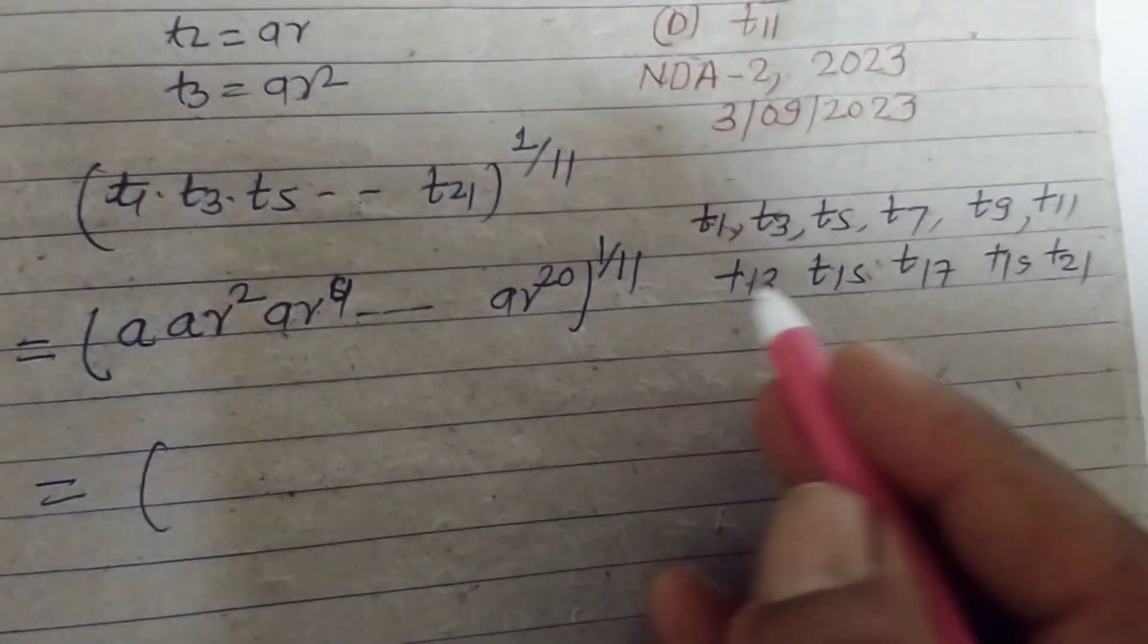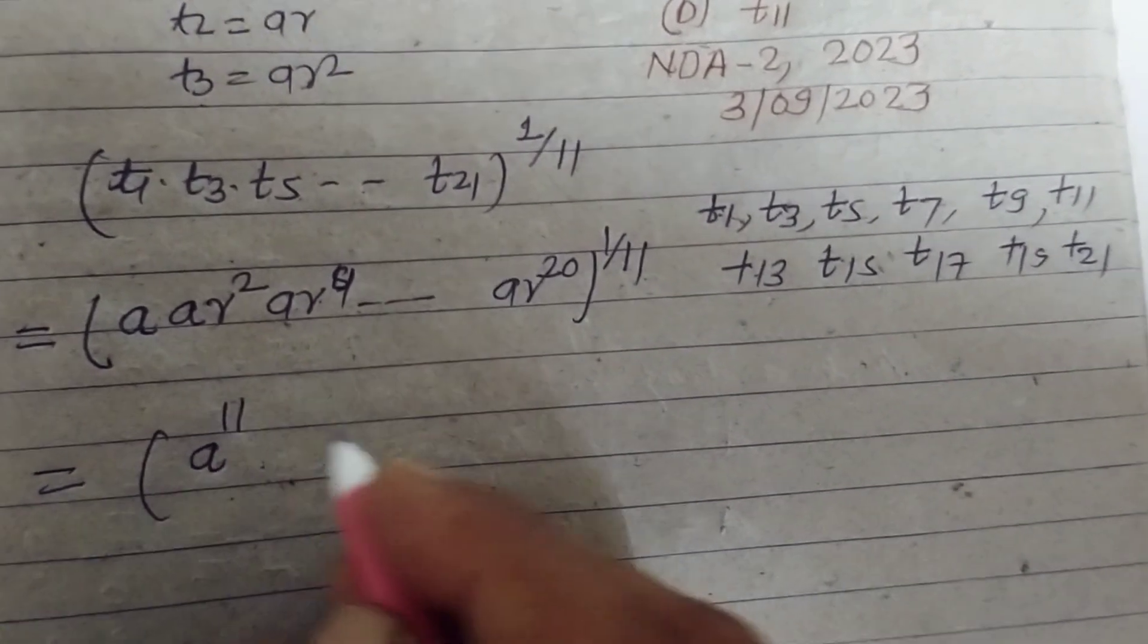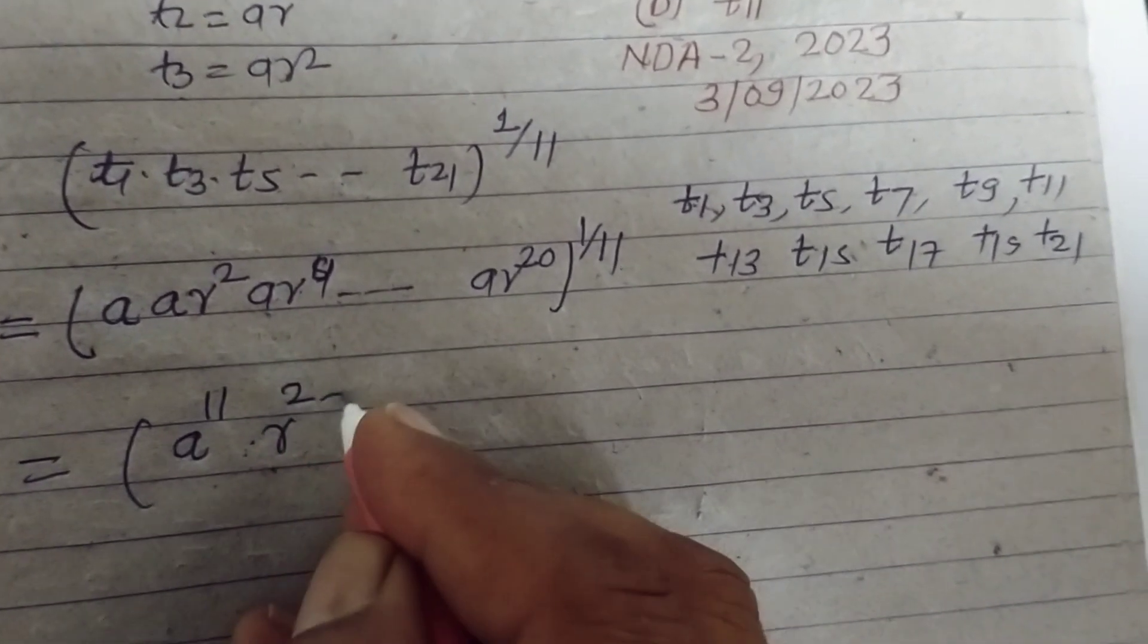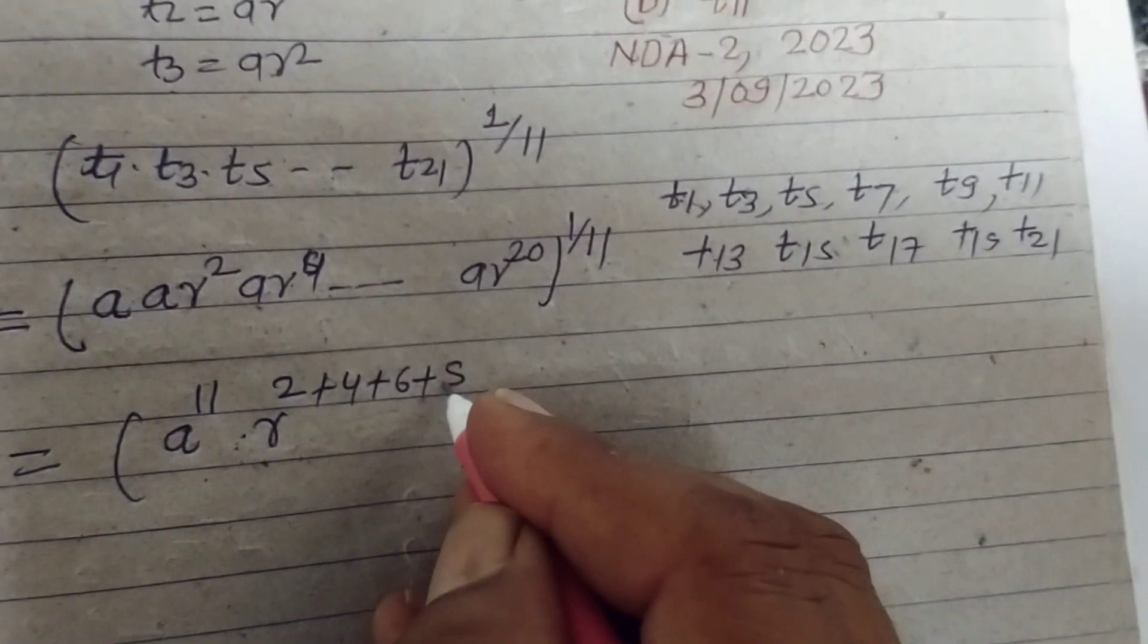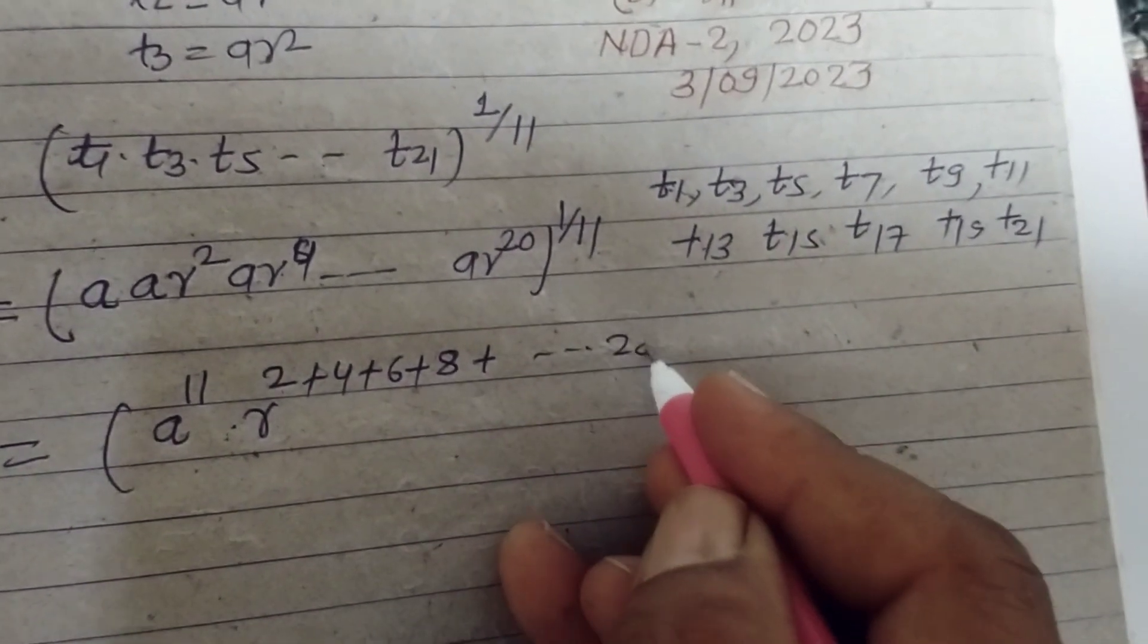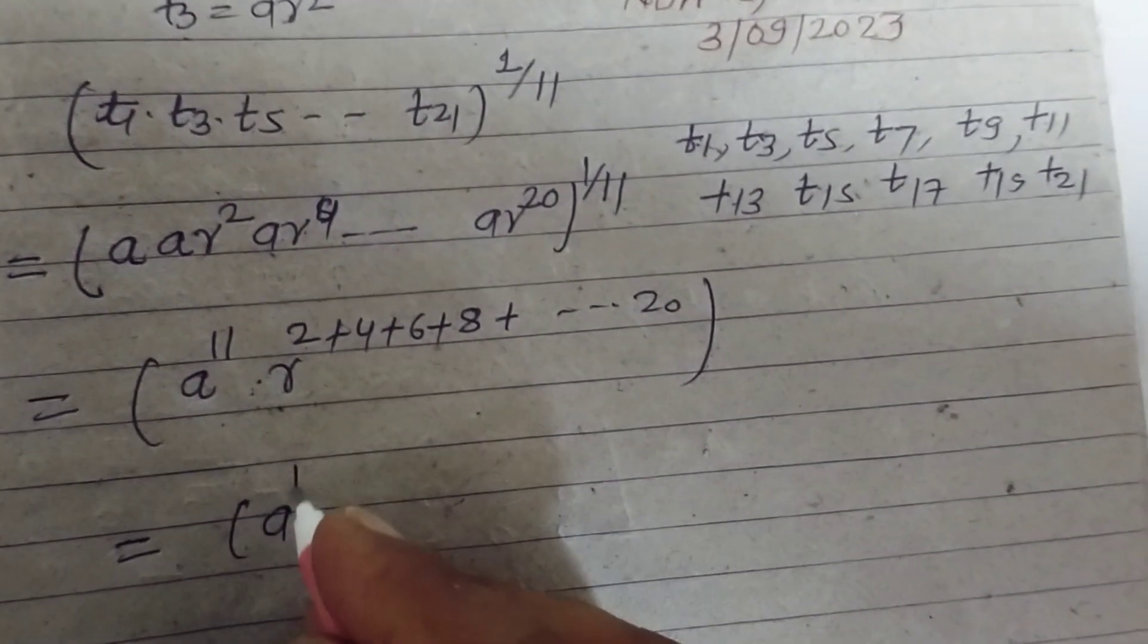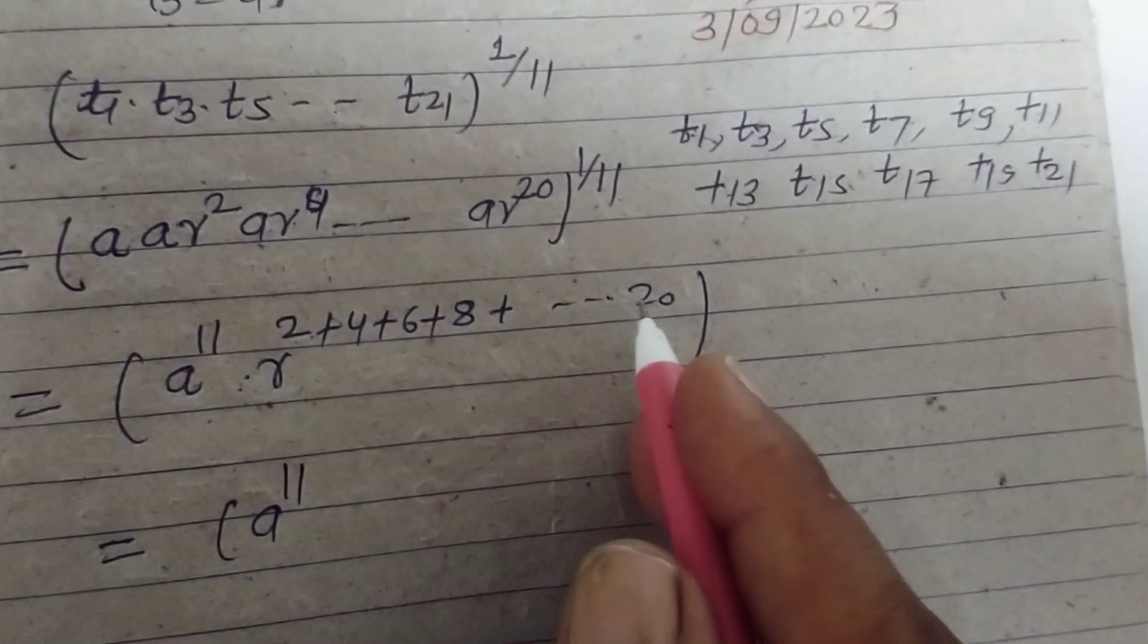Equal to, these are 11 terms, so a is multiplied 11 times, so a to the power 11, and r is 2 plus 4 plus 6 plus 8 up to 20. This becomes to the power 1 by 11, and these become 2 to 20.